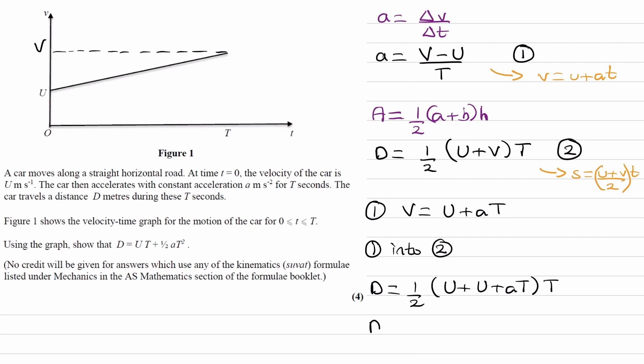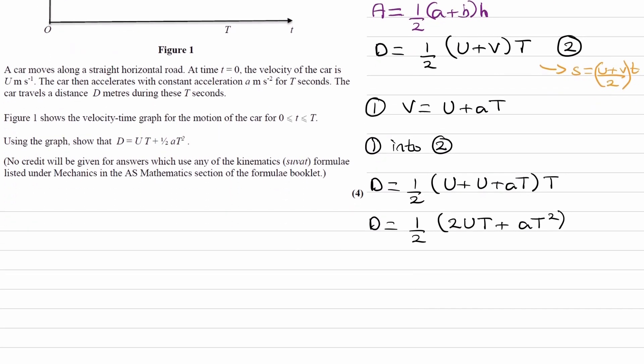Expand out the interior of that bracket, so 1 half 2U plus, actually I'll times it by T as well, so 2UT plus AT squared. And then we half everything, it becomes UT plus 1 half AT squared, which is what we wanted.